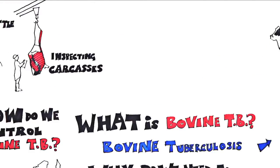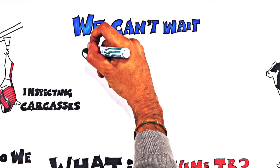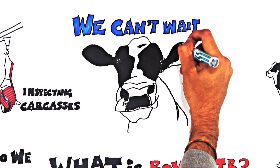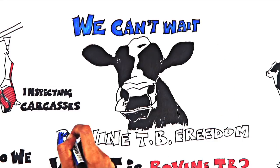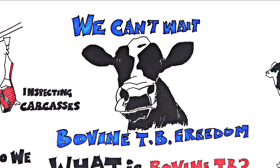Bovine TB is a terrible and destructive disease. We can't wait until new control methods become available. That's why the strategy is making use of the tools available now, to achieve bovine TB freedom for England.